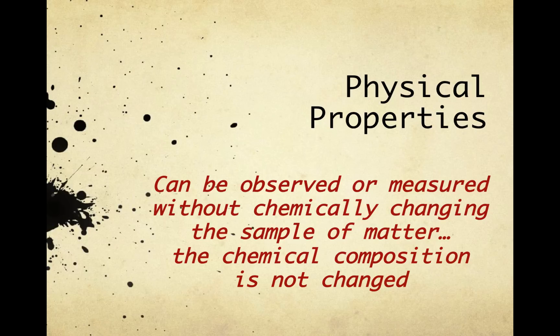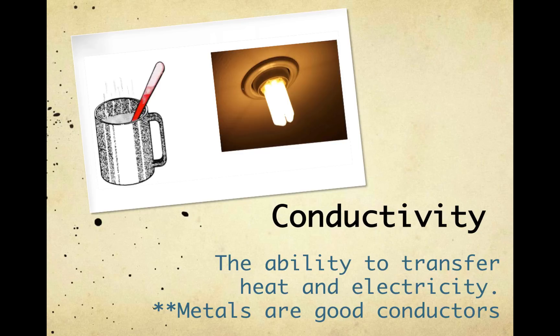Now let's consider some physical properties. Physical properties can be observed or measured without chemically changing the sample of matter. In other words, the chemical composition is not changed. The first example of a physical property is conductivity. Conductivity is the ability to transfer heat and electricity. Metals are good conductors.